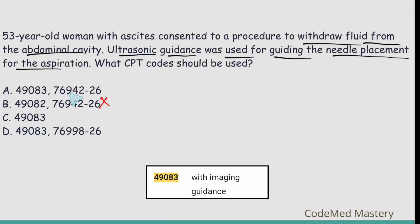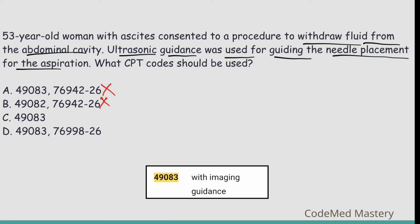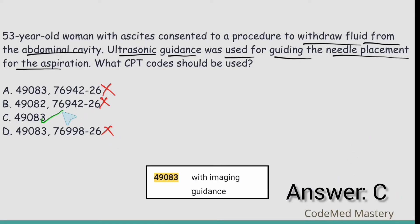We are left with options A, C, and D. Option A includes 76942 — ultrasonic guidance for needle placement, imaging supervision and interpretation — but code 49083 already includes ultrasonic guidance, so we should not report 76942 again. Eliminate option A. Option D includes 76998 — ultrasonic guidance, intraoperative — that is also wrong; it is not relevant to this scenario, and again 49083 already includes ultrasonic guidance. Eliminate option D. The right answer is option C, 49083.